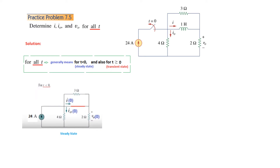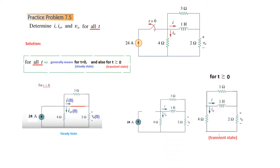For T less than 0 the switch is closed. In steady state, the inductor becomes a short circuit, so we've shown it as a straight line. When the switch is open, the current source has no complete path for current flow, so it's disconnected from the circuit. Our remaining circuit is the transient state circuit, for T greater than 0. We'll consider these two cases of time separately.